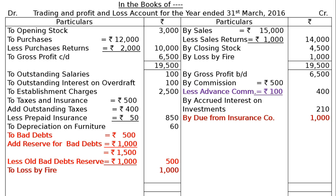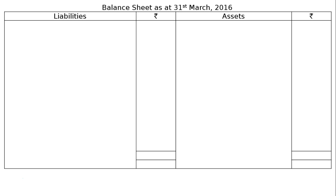Loss by Fire: show Rs. 1,000 in the credit side of the Trading Account and Rs. 1,000 in the debit side of the Profit and Loss Account. Due from Insurance Company is Rs. 1,000 on the credit side and also Rs. 1,000 in the asset side. Totaling the Profit and Loss Account credit side gives Rs. 8,110. Deducting all expenses gives Net Profit carried down of Rs. 3,000 — the final answer for the Profit and Loss Account.